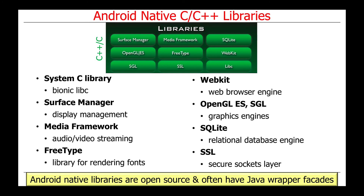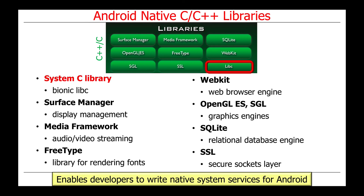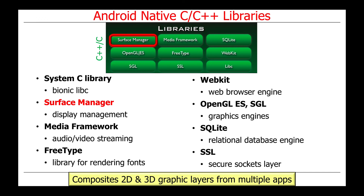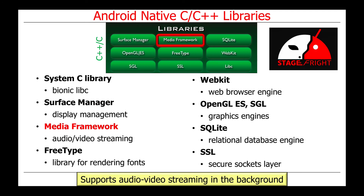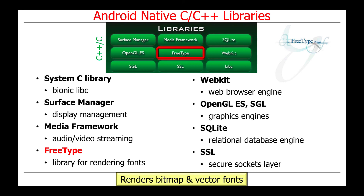There are a number of native libraries provided as part of the Android stack, available in open source form and often having Java wrapper facades. One example is the System C libraries called Bionic LibC, which enables developers to write native system services for Android using C/C++ directly. There's also the Surface Manager, used to composite 2D and 3D graphic layers for multiple apps for display on the device's screen. There's the Media Framework known as StageFright, which supports audio-video streaming in the background so you can watch a movie or listen to music without consuming too much CPU performance.